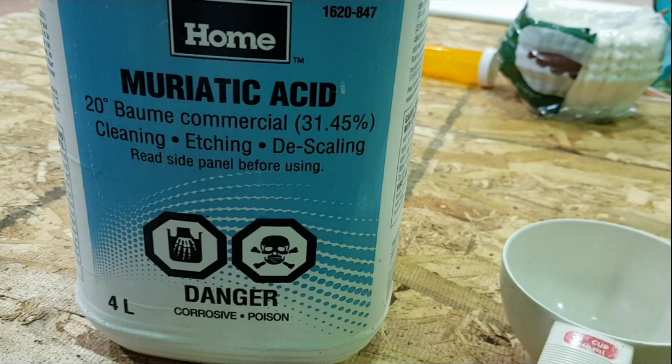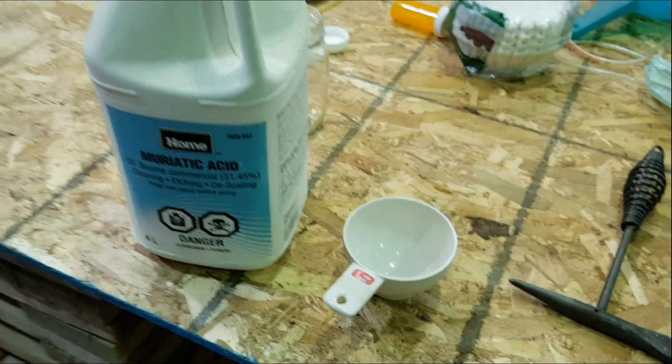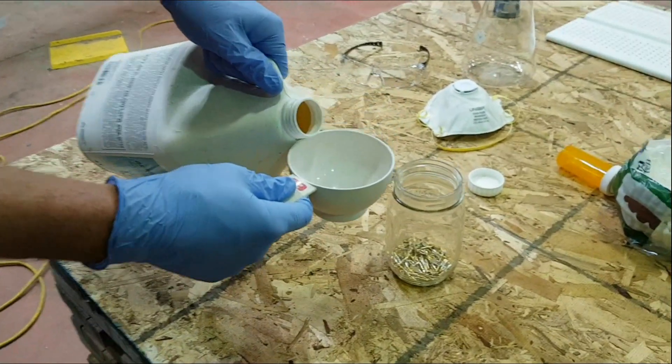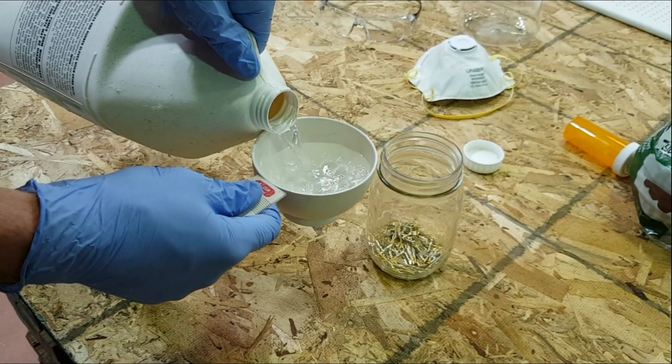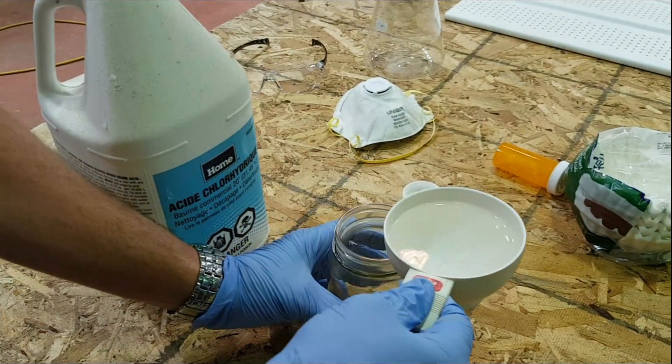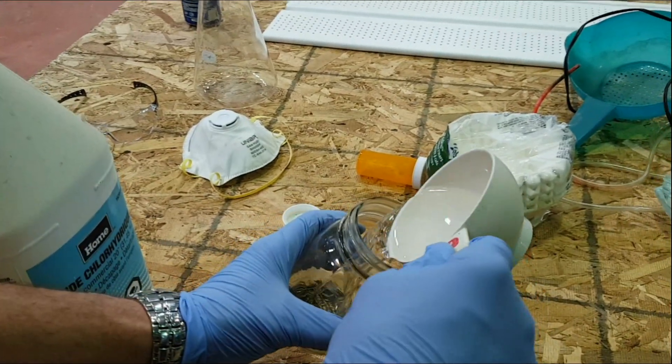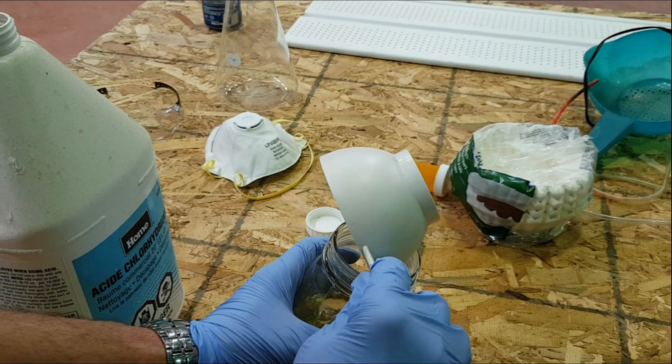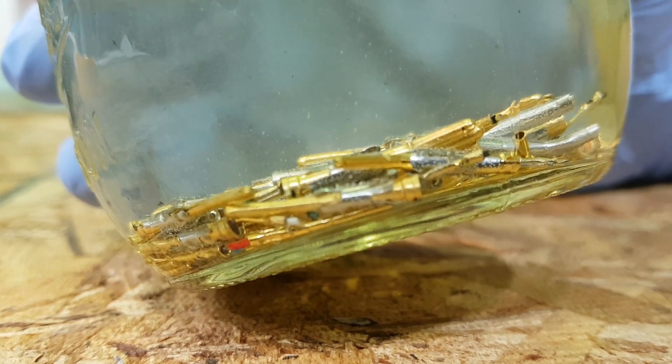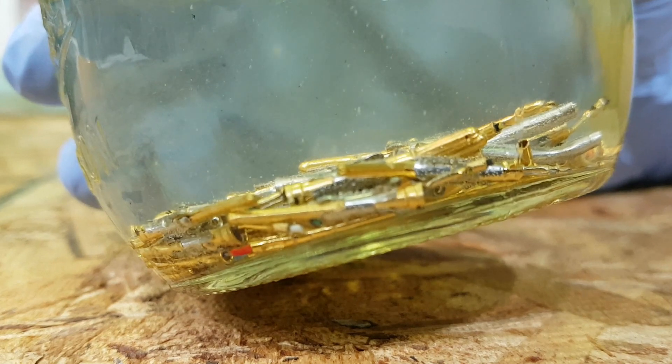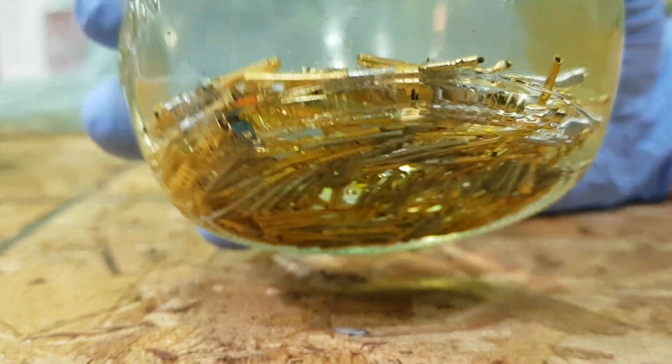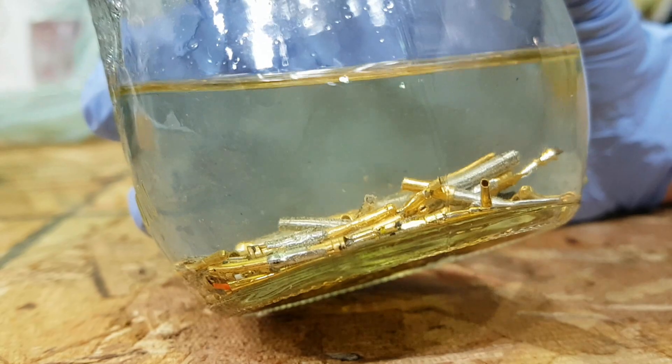So the first thing we're going to add here is muriatic acid. You can buy this at your local hardware store. It's used for cleaning cement and other household uses and it's about 30% hydrochloric acid. Today with this small batch we're just going to add one cup into the mixture carefully. As you can see this chemical reaction is already taking place. The muriatic acid which is 31% hydrochloric acid will eat away at all of the base metals and leave you with just the gold from these pins.